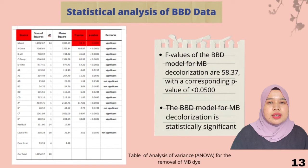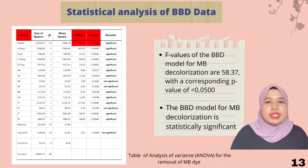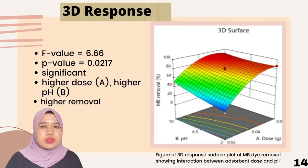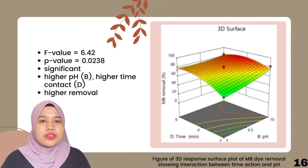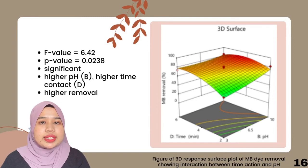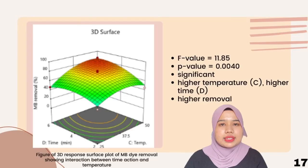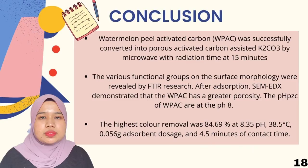BBD RSM was used to evaluate the individual and interaction effects of independent parameters. Based on the table, the F value of the BBD model for MB decolorization is 58.37 with a corresponding p-value of less than 0.05, indicating the model is statistically significant. The figure shows that increasing solution pH and absorbent dose results in an increase in MB dye removal. For the interaction between absorbent dose and temperature, MB removal increased as both dose and temperature increased. The interaction between time and pH shows MB removal increased as time increased from 2 to 6 minutes and pH increased from 3 to 10. The interaction between time and temperature shows MB removal increases as both temperature and time increase.